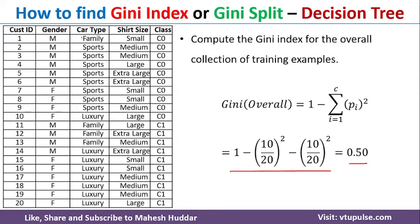But if we want to select a splitting attribute, we need to find the Gini for individual attributes. So, first we will find the Gini for gender, then car type, and then shirt size. Based on that, we will decide which one is the best splitting attribute.